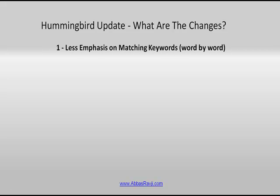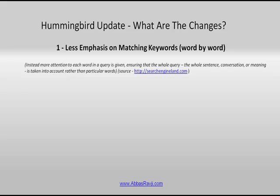So the new Google Hummingbird update — what are the actual changes? Firstly, the first point is that there's less emphasis on matching keywords word by word. Instead, here's a little extract from Search Engine Land: more attention to each word in a query is given, ensuring that the whole query, the whole sentence, conversation or meaning is taken into account rather than particular words.